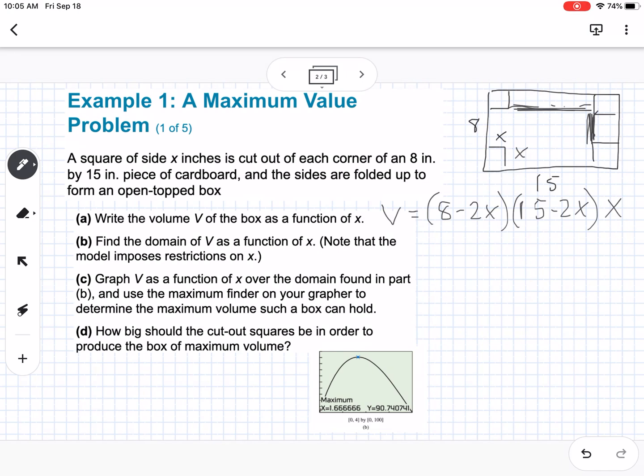So it says to find the domain of V as a function of x. Note that the model imposes restrictions on x. So if we were to multiply all this out, it's just going to be a cubic graph, which we know domain is all real numbers, but this is an example of because it's a context, we are going to have restrictions on our domain. So for this, we have to think about where can x be? So I'm going to take the short side and think about the short side.